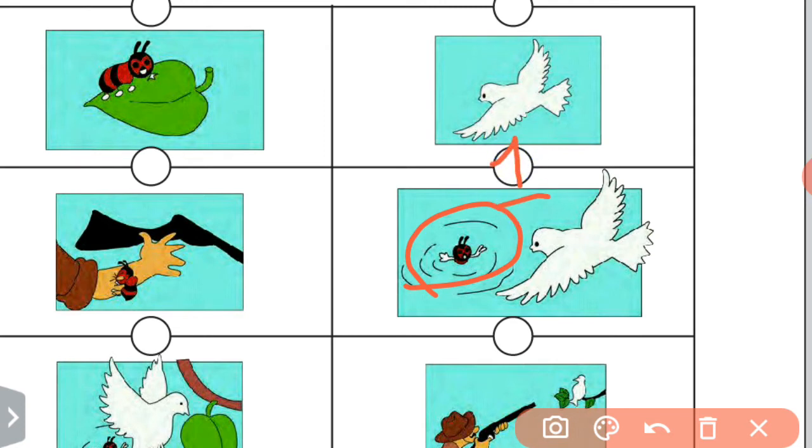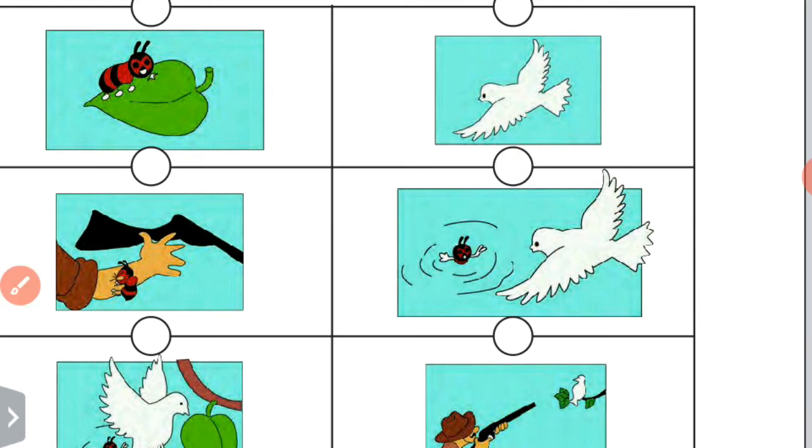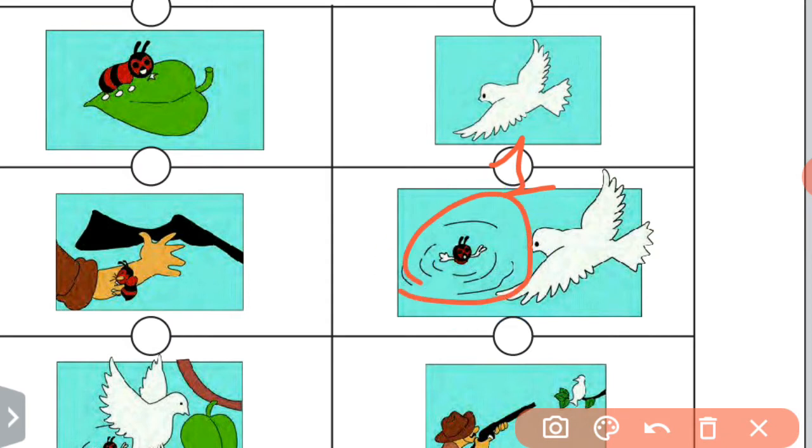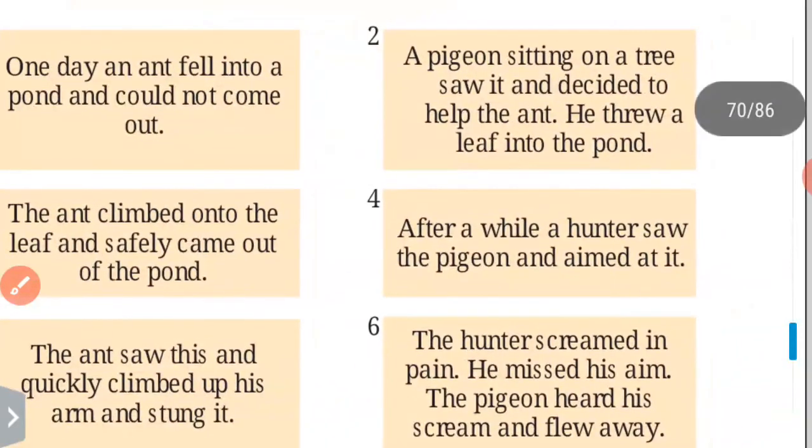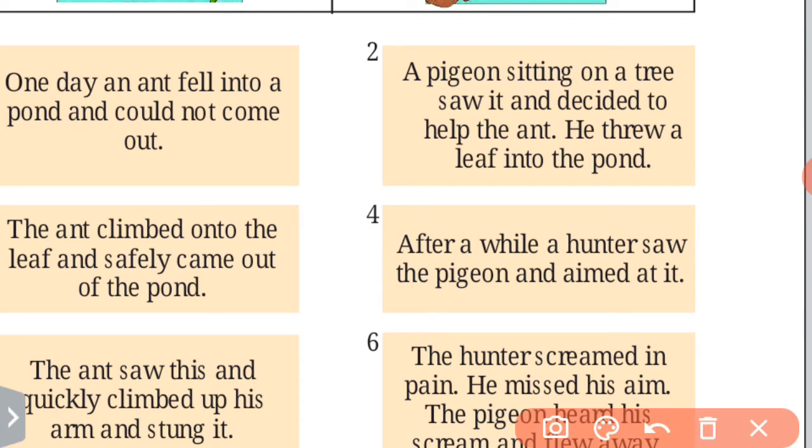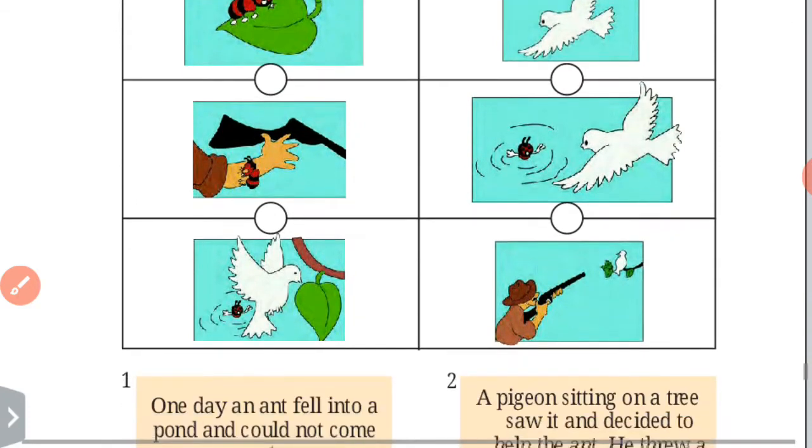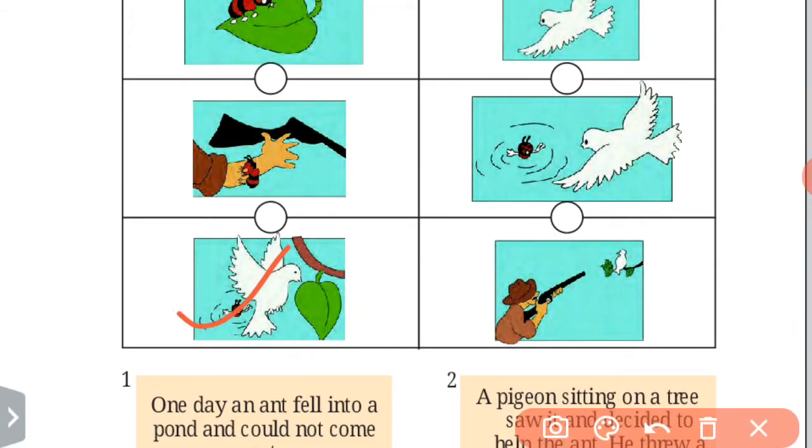In this picture, the ant is drowning here and the pigeon sees that. In this picture, the pigeon is trying to pluck the leaf from the tree to help the ant. So the pigeon wants to help it. So this is number 2.